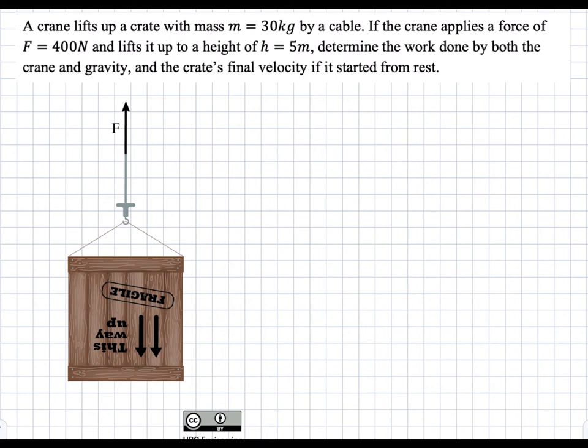In this question, we have a crate that is being lifted by a constant force at a height of 5 meters. And we are asked to determine the work done by both the crane and gravity, and the crate's final velocity if it starts from rest.